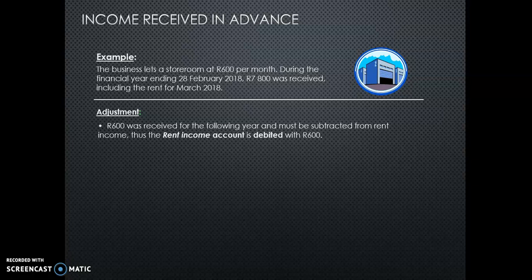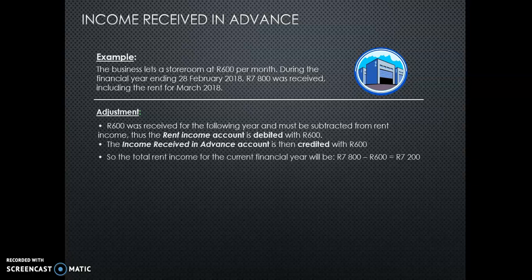So rent income, which has a credit balance because it is income, must be debited — it must be decreased. So the credit then is income received in advance. The total rent income for the current financial year is 7,200, even though they received 7,800. You can double check this: if the rental amount is 600 Rand per month, you multiply 600 by 12 and you get 7,200.